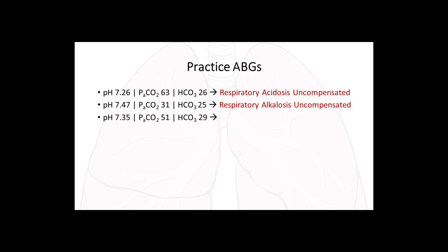Example three: pH 7.35 — normal but on the low, acidotic side. PaCO2 51 — greater than 45, more acidic. Bicarb 29 — slightly elevated above normal. The bicarb has increased to compensate for the elevated CO2 and the pH has returned to normal. The answer is compensated respiratory acidosis.